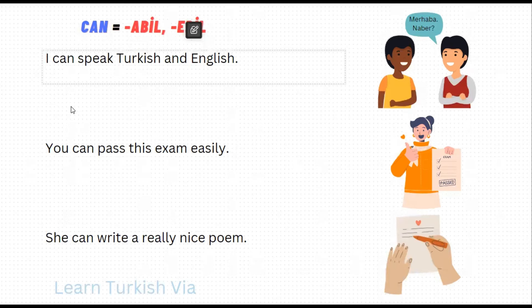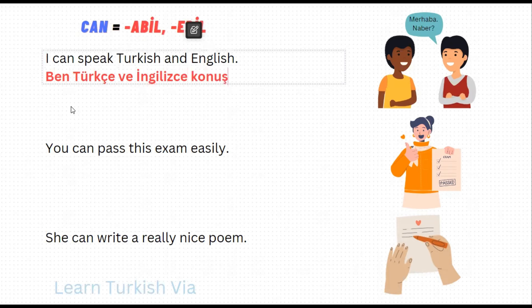In the first sentence, it says 'I can speak Turkish and English.' Let's translate. I – ben, Turkish – Türkçe, and – ve, English – İngilizce, speak – konuş, can speak – konuşabil, simple present tense – geniş zaman, -ir. I can speak – konuşabilirim. So 'I can speak Turkish and English' is 'Ben Türkçe ve İngilizce konuşabilirim.'